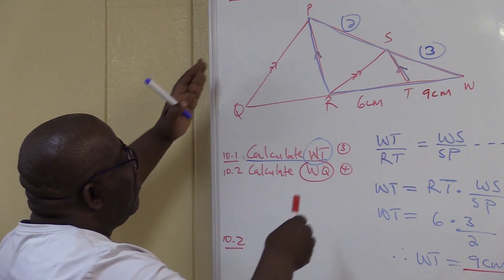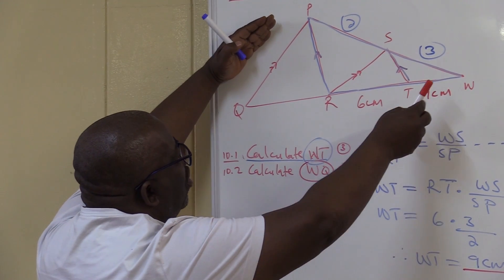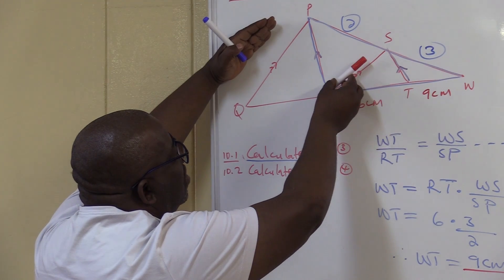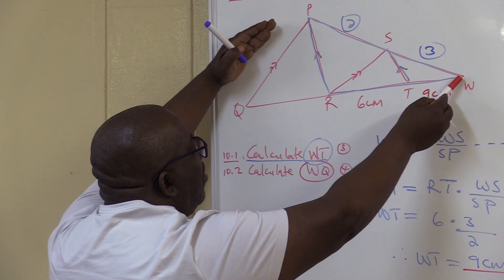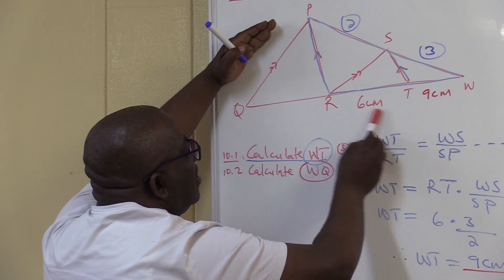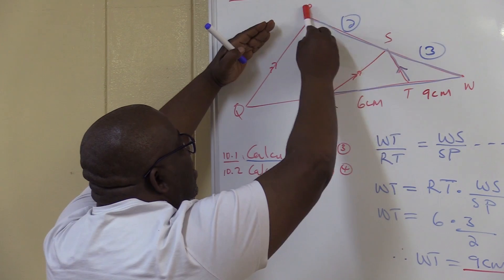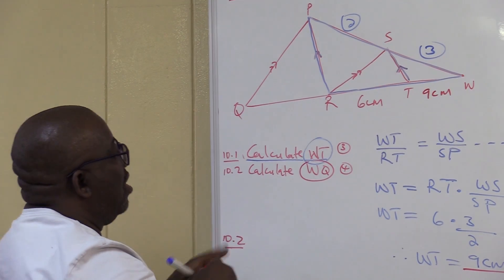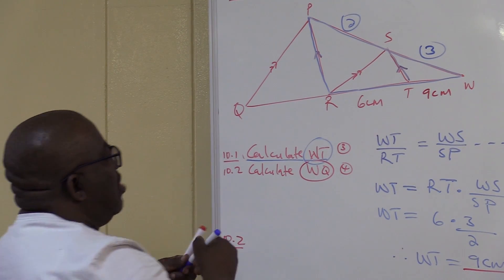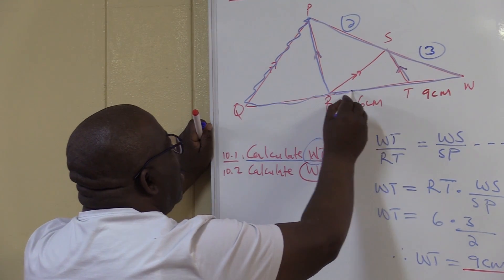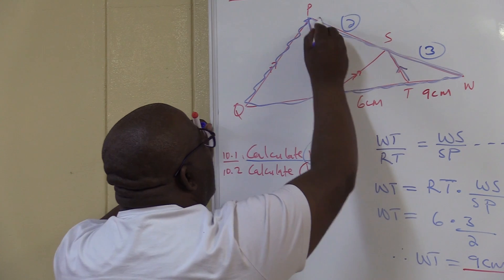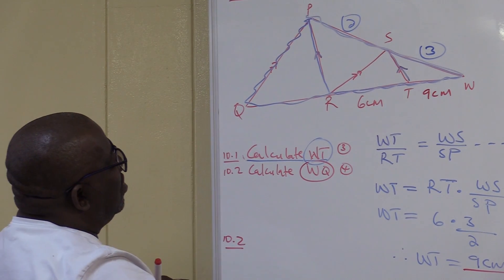Let me see which triangle to use. If I use this triangle, this bigger triangle, I will have this over this equals to that over that. Yeah, that's the triangle. Let me just highlight the triangle that I'll be using. I'll be using this bigger triangle. That's the triangle that I'll be using.